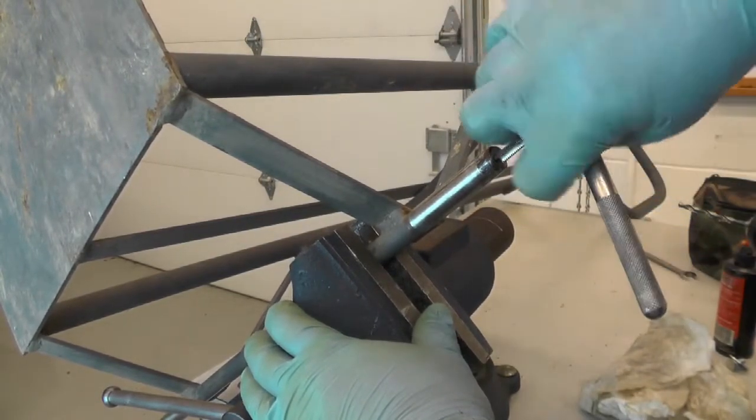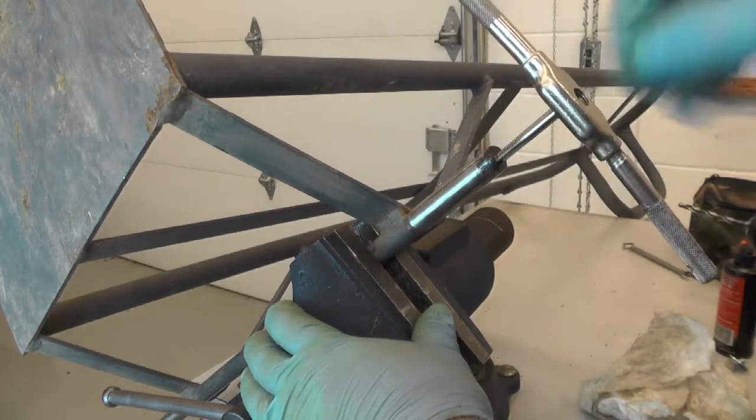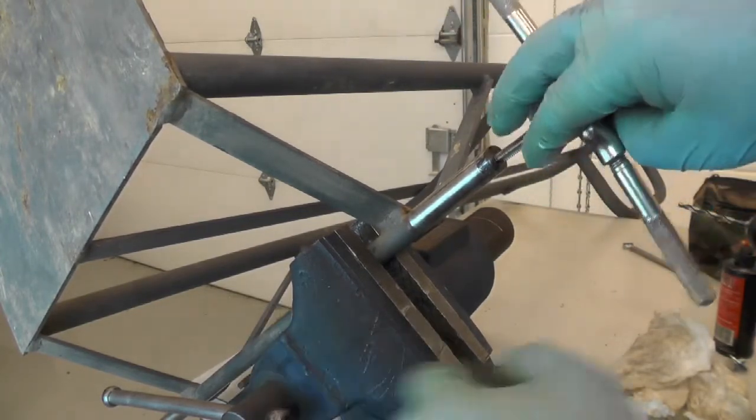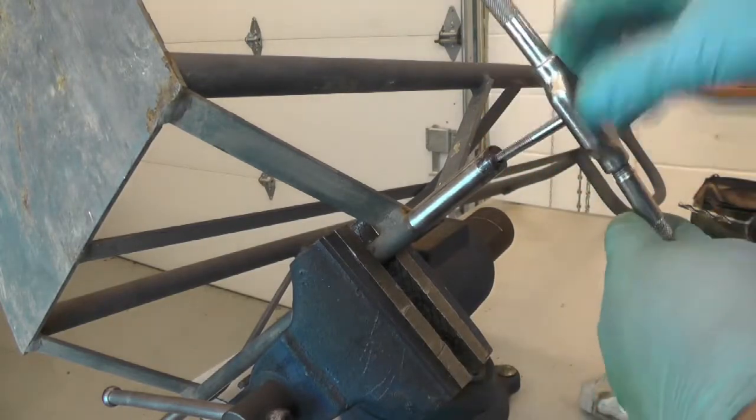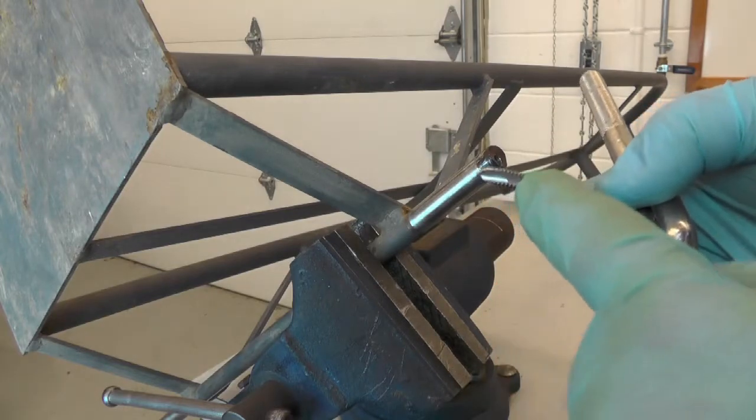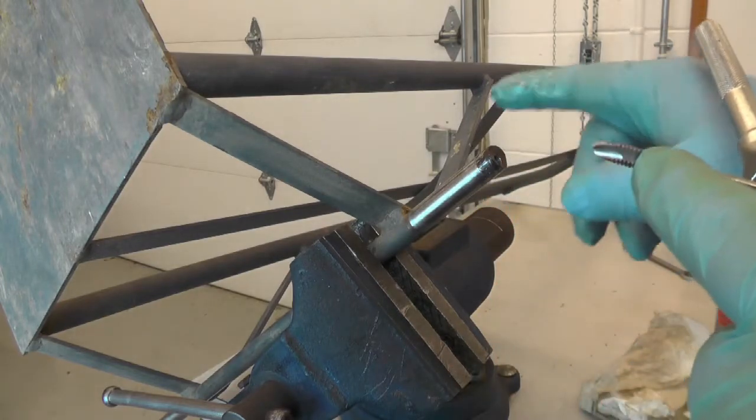If you feel it's starting to bind up, stop. You definitely don't want to force a tap. Even with a tap as large as this quarter 20, it's very easy to break one of the threads off or in a worst case scenario, actually snap the tap down inside your hole.